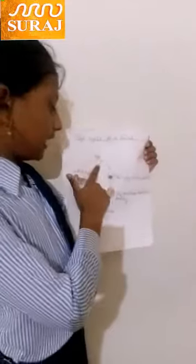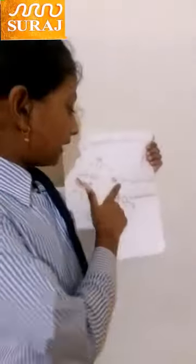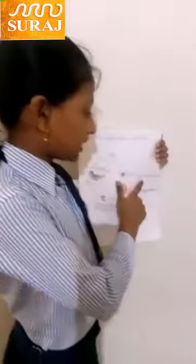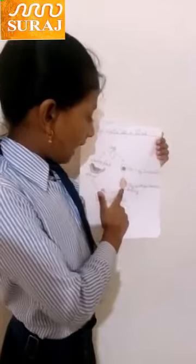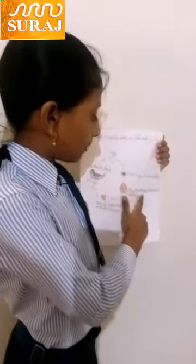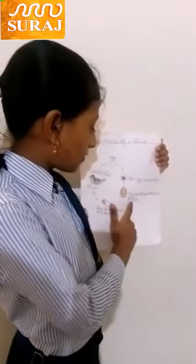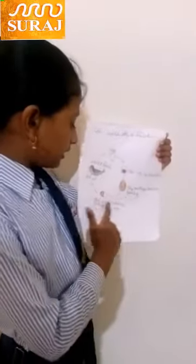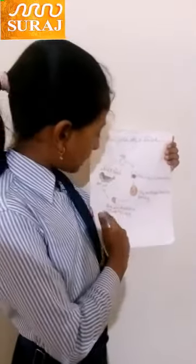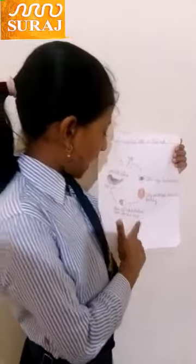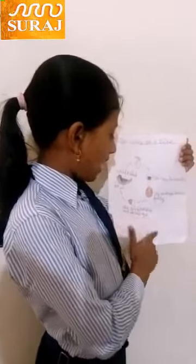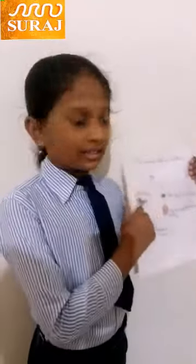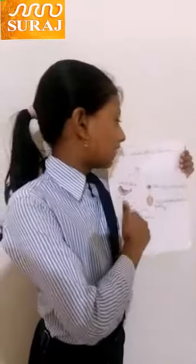The adult bird lays an egg. Then the egg is developing and the embryo develops fully. At last the chick hatches out of the egg. This is the life cycle of a bird.